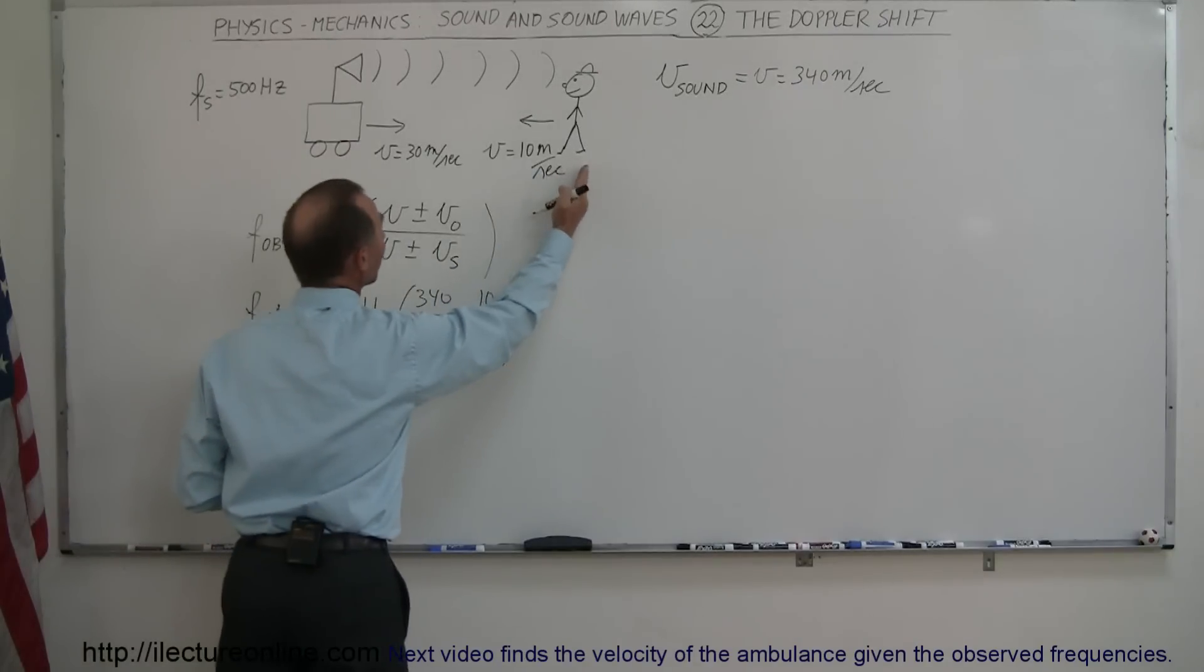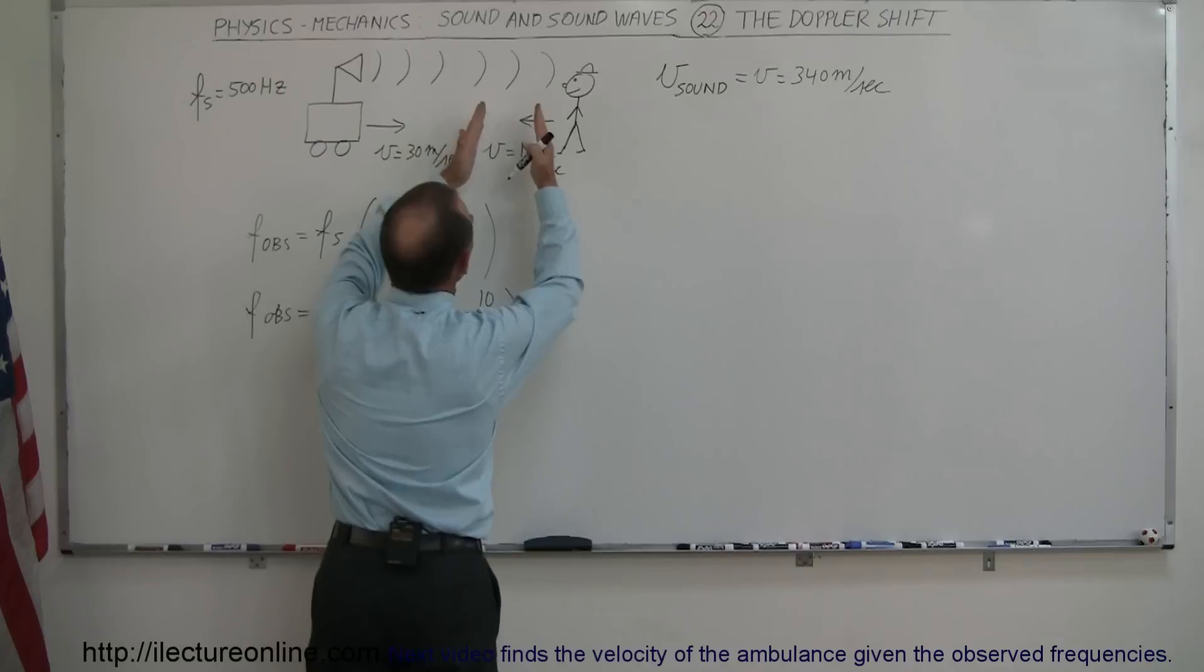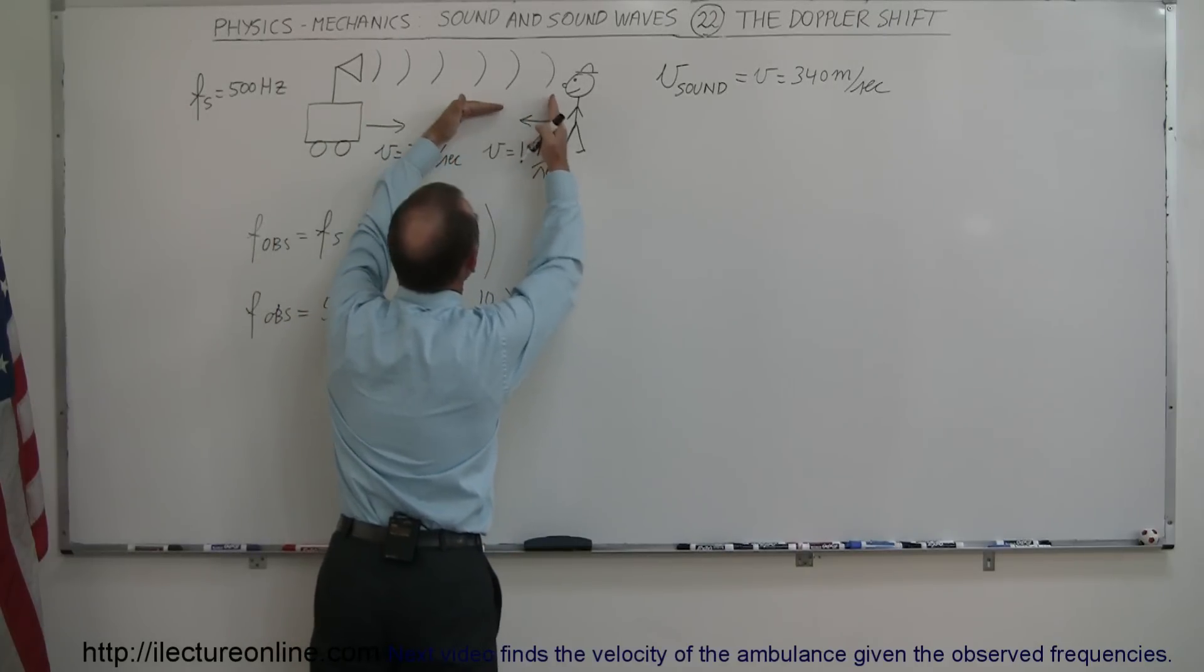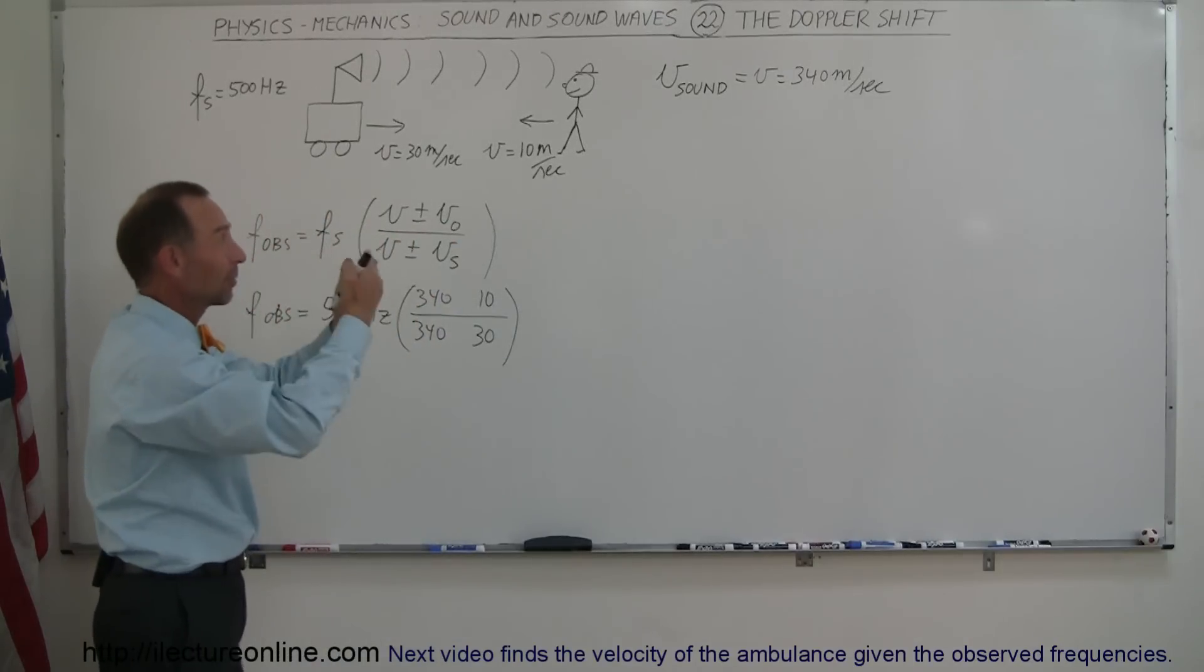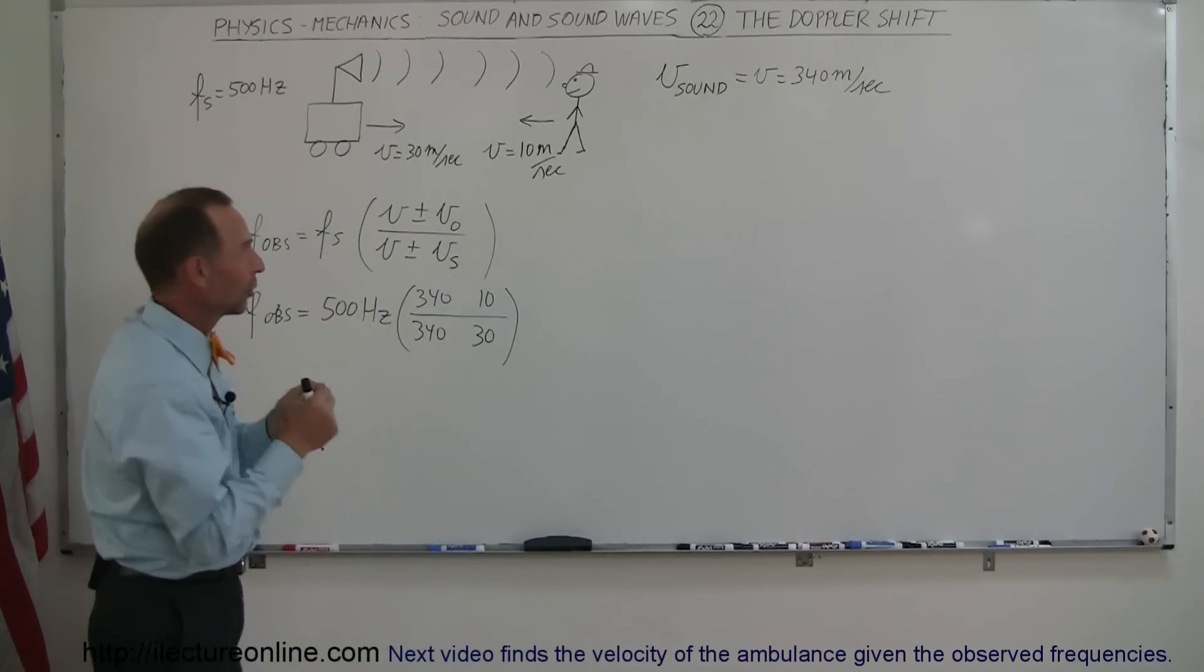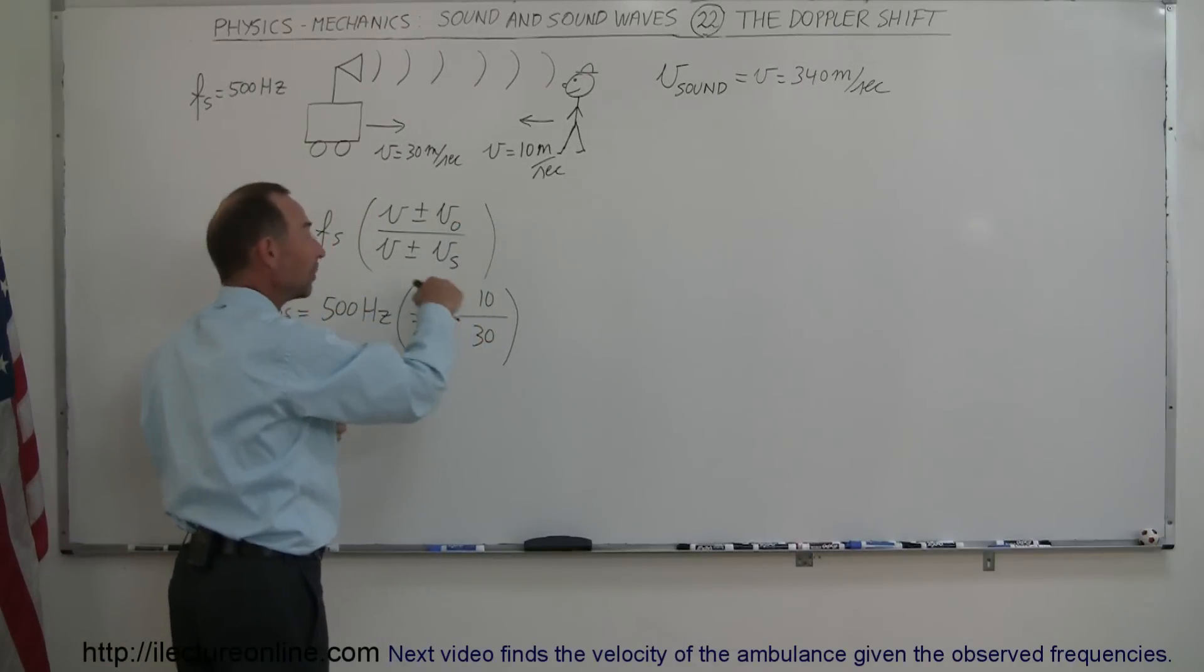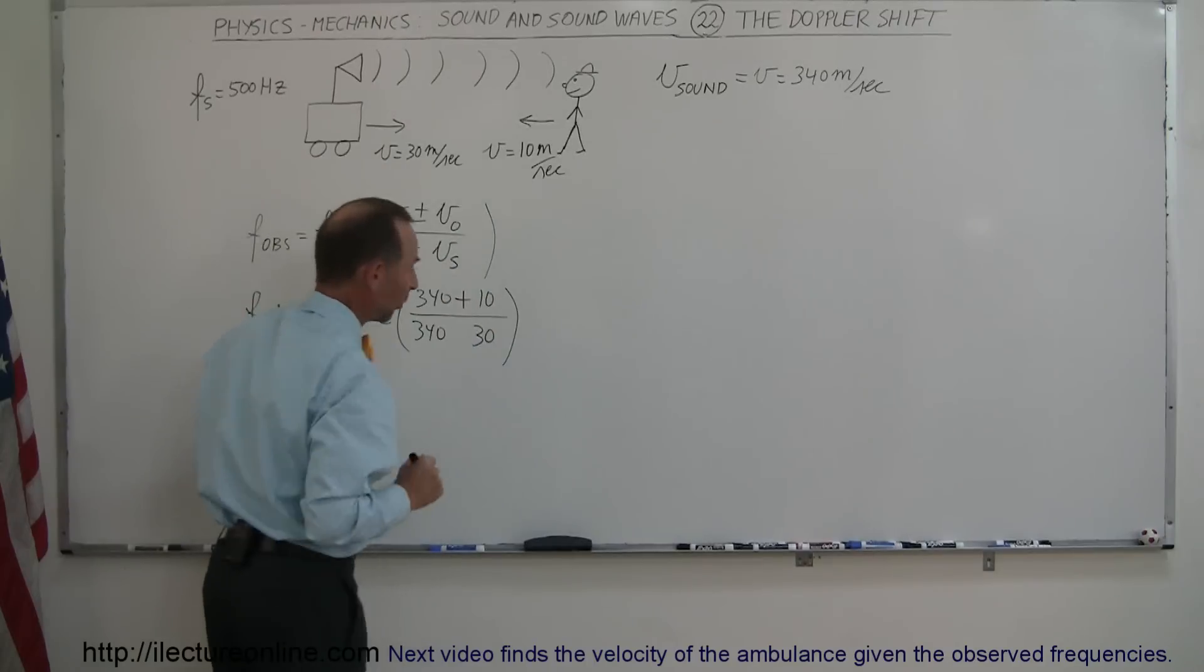The observer is moving towards the source. That would appear as if the waves come faster because he's meeting them head-on as the waves are moving this way, he's moving towards them. It appears that the wavelengths get shorter, therefore the frequency appears higher. If he's going to hear a higher frequency because of his motion, we need a plus there to make the numerator bigger, to make the frequency observed bigger. So a plus will work there.